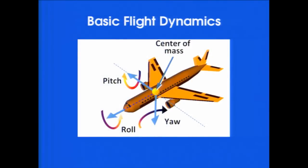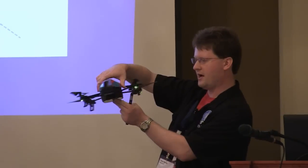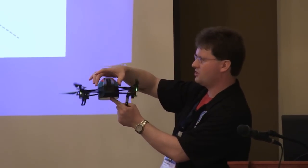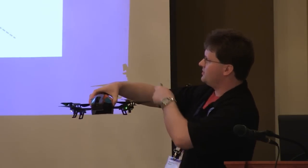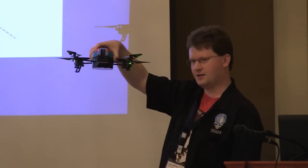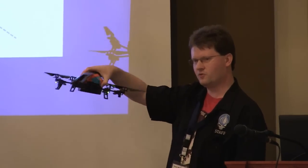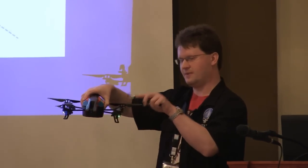Basics of flight dynamics — this is a little chart you'll see on pretty much any flight talk. Roll goes this way, yaw goes around, and then pitch back and forth. One thing to note: if you had an airplane, thrust would go forward; thrust on this goes up and down. And the more energy you use doing that, the less energy it's going to have for maneuvering around, since it's using the same propellers for that.